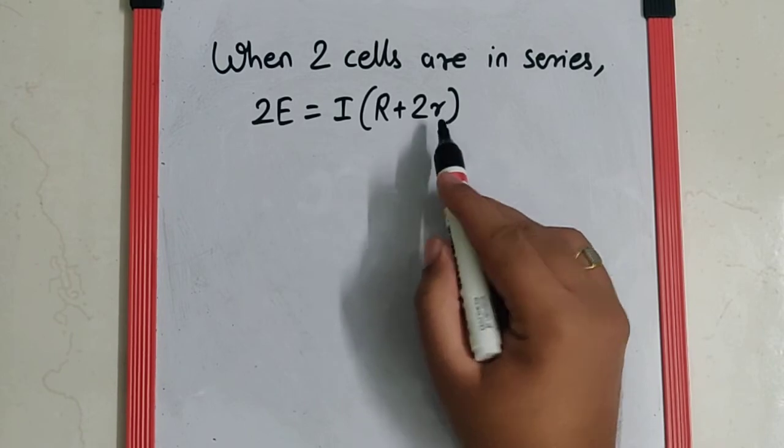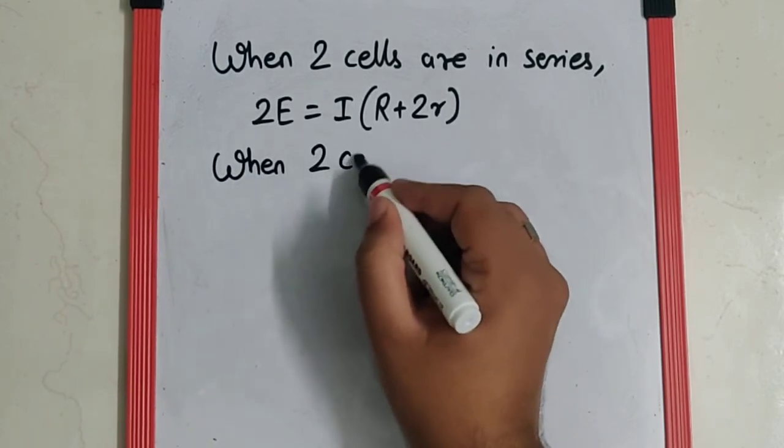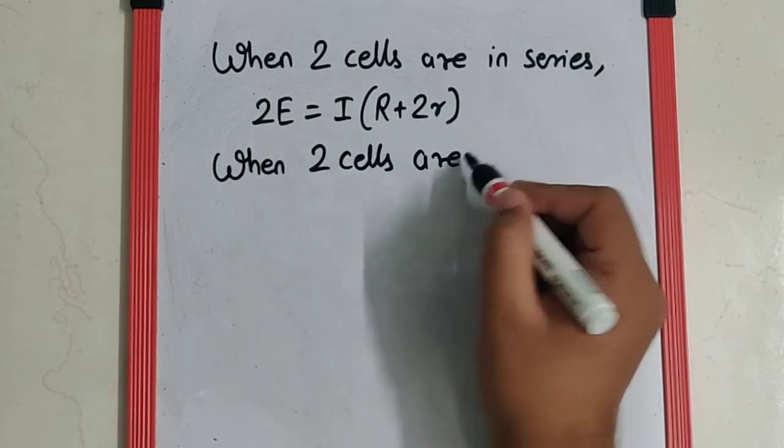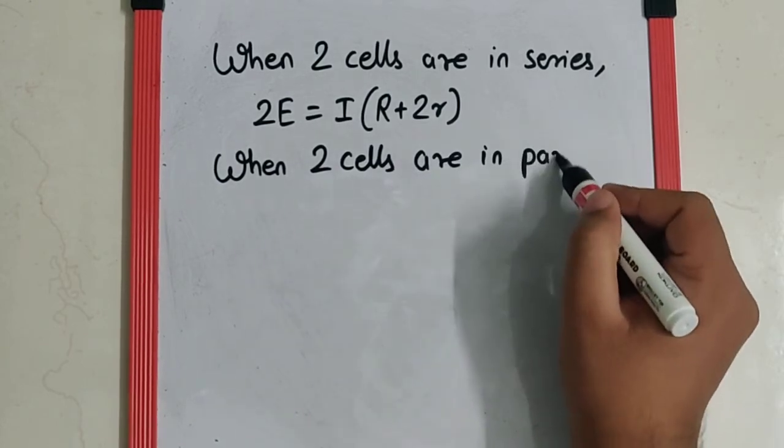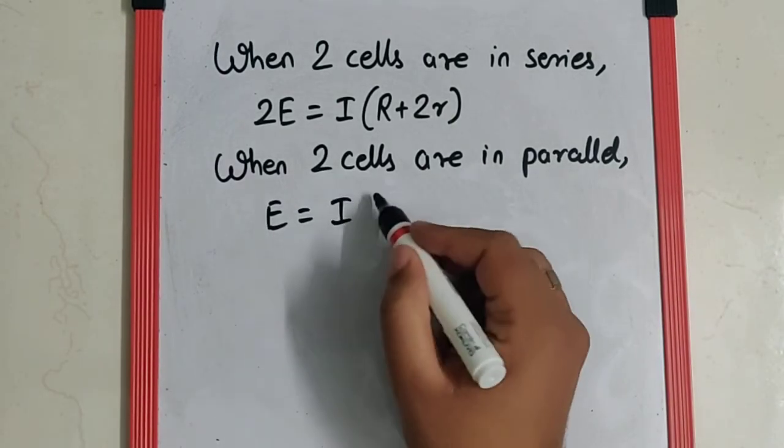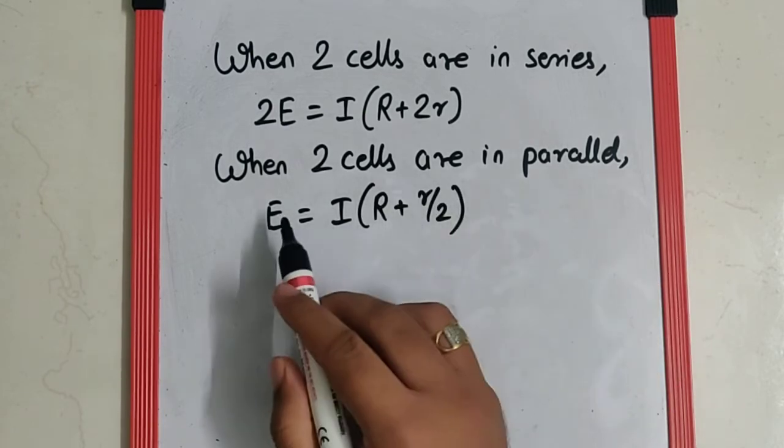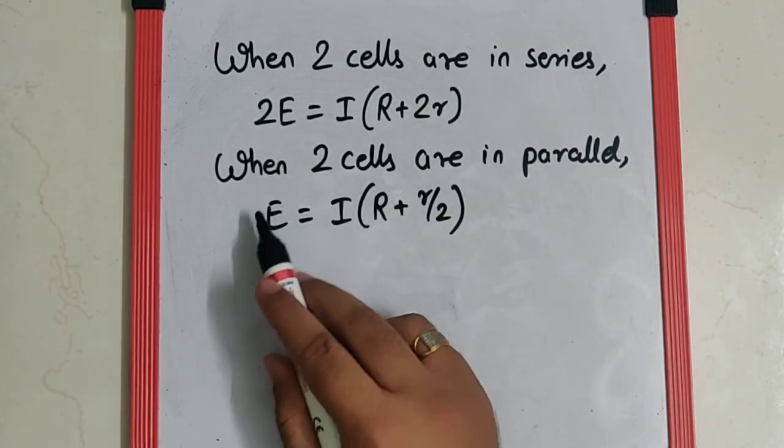But when two cells are in parallel we can take E equals I bracket R plus r by 2. For cells in parallel, the EMF remains the same but the internal resistance becomes half because these cells have identical resistance.